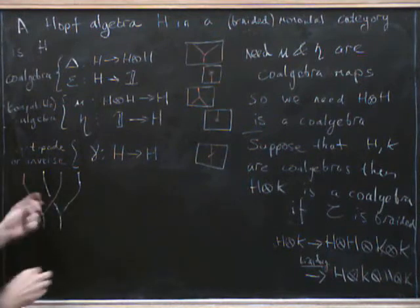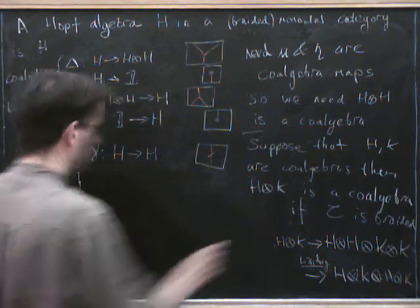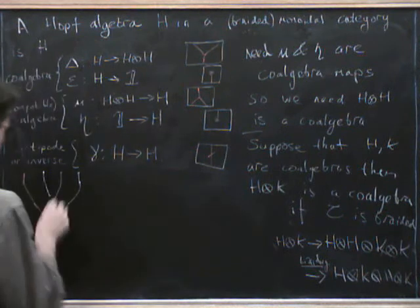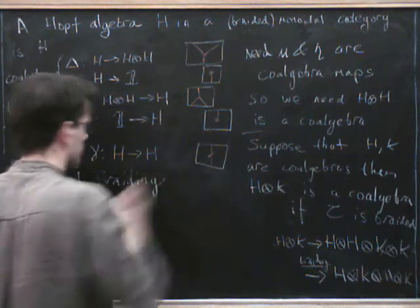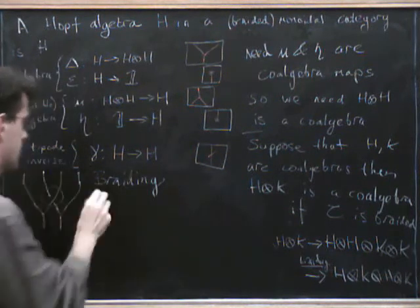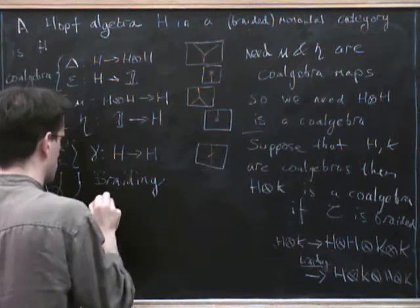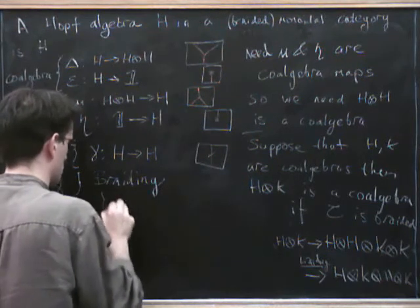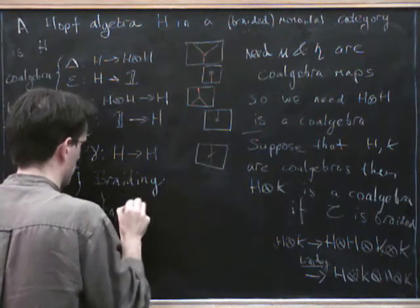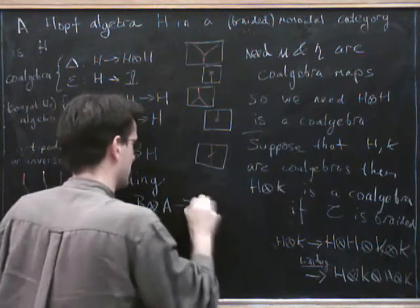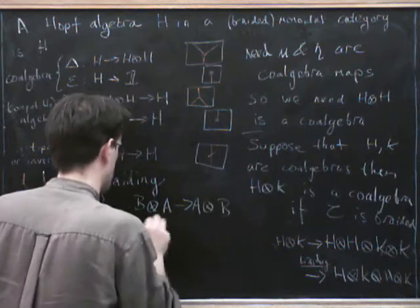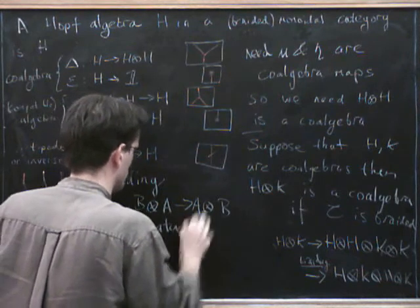So this is then the co-product on here. So here we're using, this is the braiding, so that's the braiding, and the braiding. A braiding in a monoidal category is a natural transformation, tor AB, from B tensor A to A tensor B, which is sort of natural in some suitable sense.